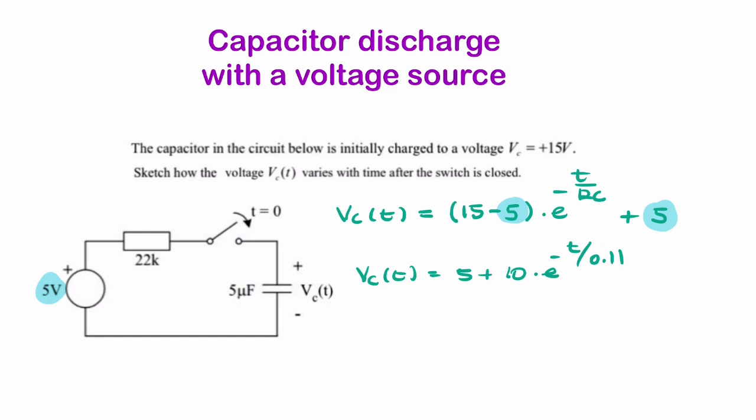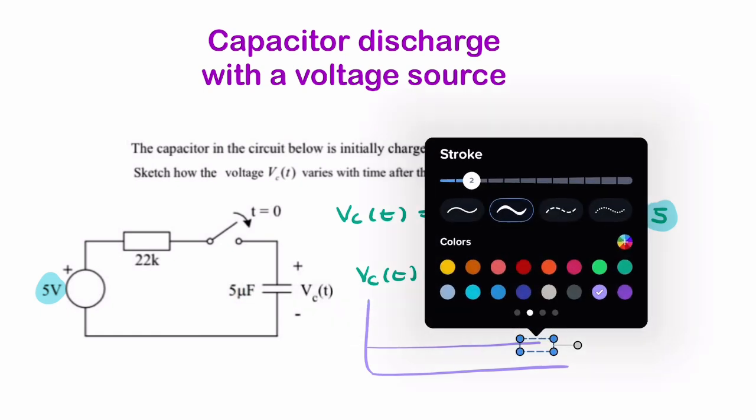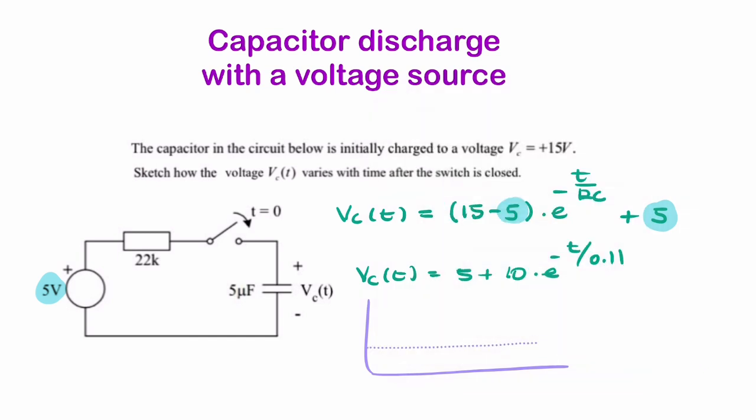it would probably look something like that. So you'd need an asymptote at 5.